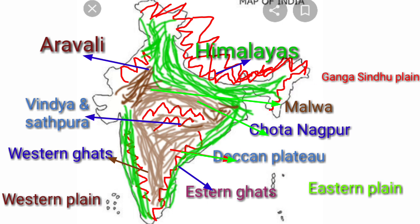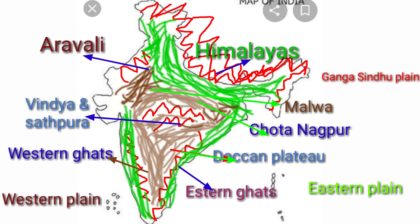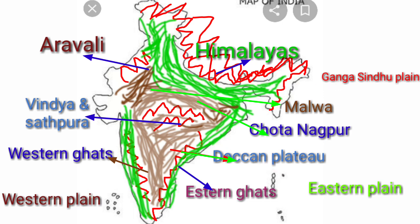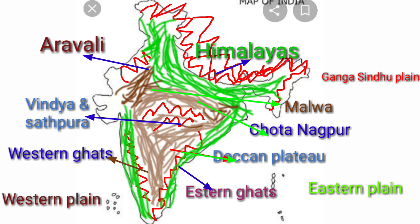Now we are going to point the plains. On the west side, the western plain. On the east side, the eastern plain. On the north side, we point and look at the Ganga-Sindhu plain. These are very important physical features of India.